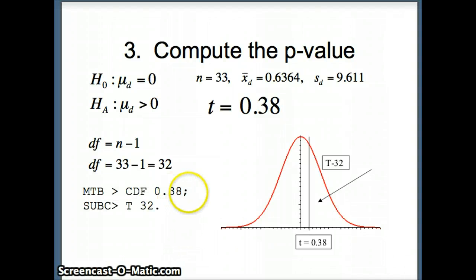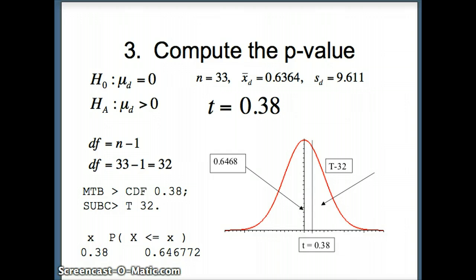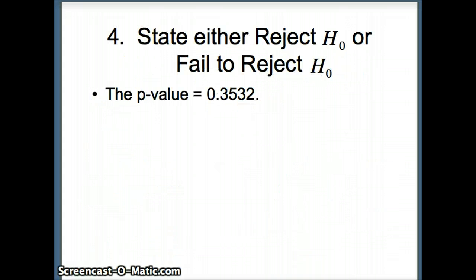So we asked Minitab, CDF 0.38, semicolon T32, and what does Minitab give us? Minitab tells us that that is 0.646772. So this is about 65% of the area. So how much is to the right? The p-value is the area to the right. Again, the alternate hypothesis is mu sub d is greater than 0. We shade to the right of the test statistic. What do we get? We get 0.3532, a very, very large p-value. So the p-value is 0.3532.